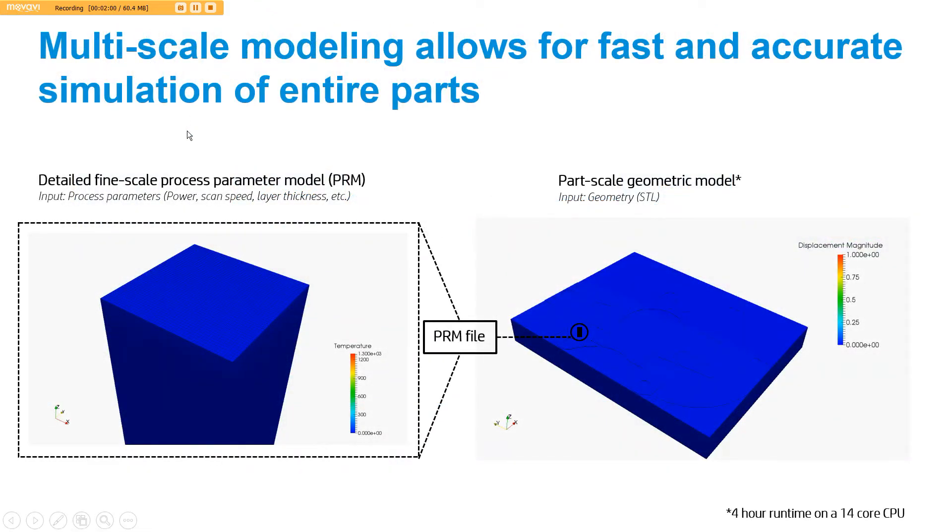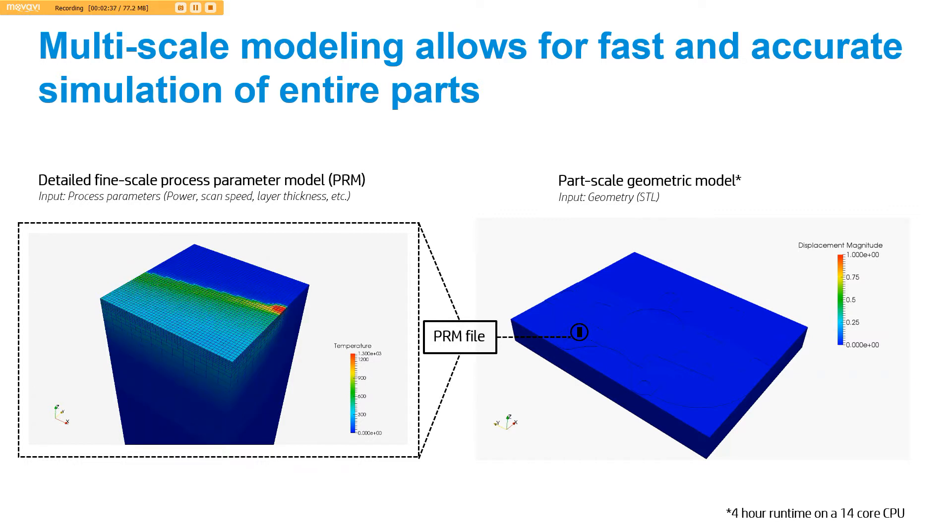What we wanted to do with NetFab Simulation is get very fast and accurate results on high-end desktop computers. The way we approached this problem was we split the analysis into two scales. The first scale is a small-scale detailed scale. This piece of material is a millimeter by a millimeter. At the small scale, we're going to take a material and run a moving source simulation using a set of machine process parameters like power, scan speed, layer thickness, etc.